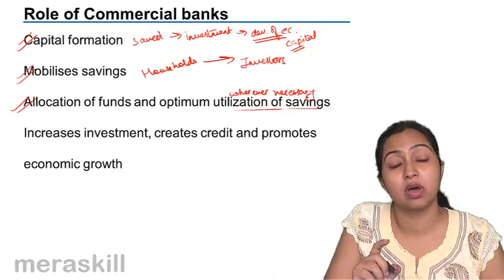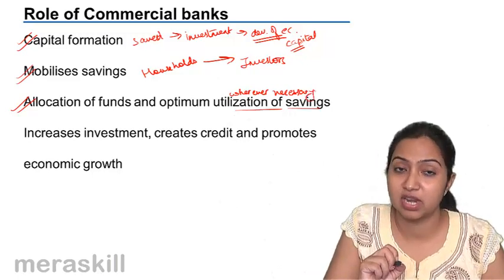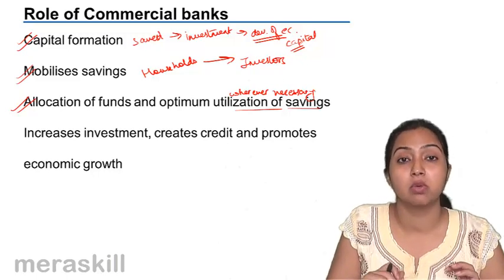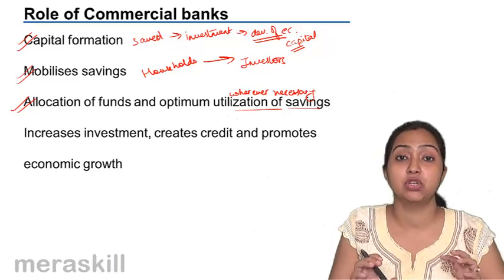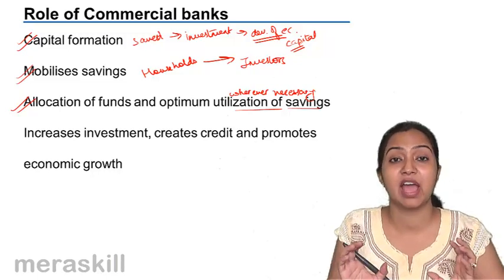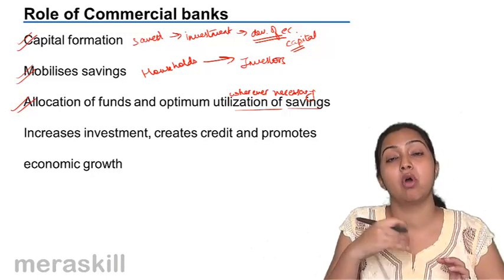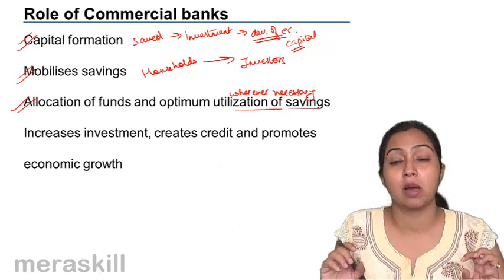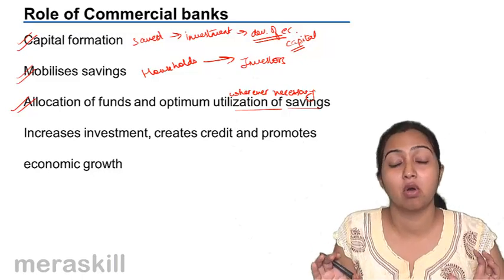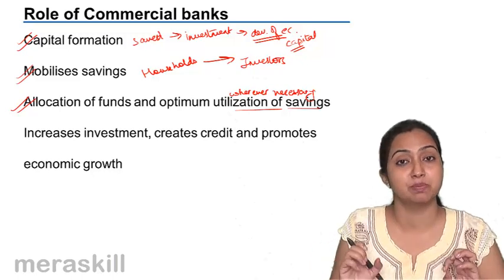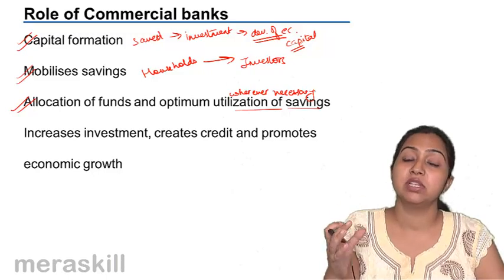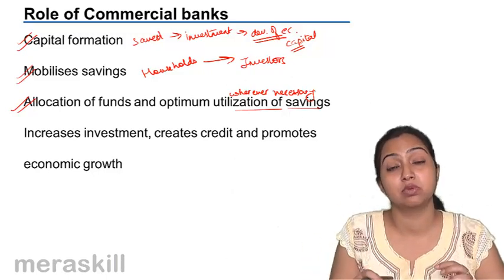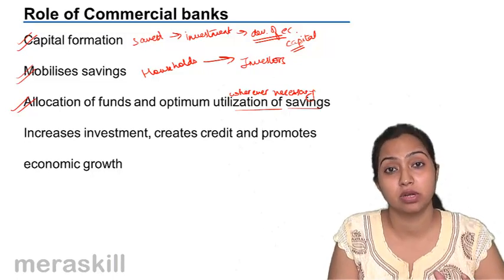This was not so earlier. Before nationalization, commercial banks were mostly in private hands. They lent money to big business houses — whoever already had money, they gave more money to those people. They did not have economic development or the upliftment of society in mind; they had just business in mind. So money was not given to priority sectors; at times it was given to industries where it was not required at all.